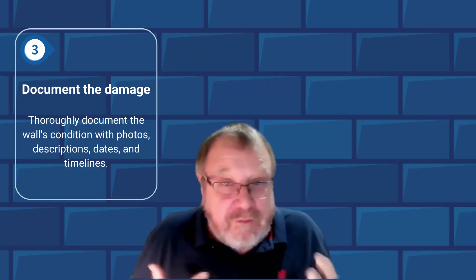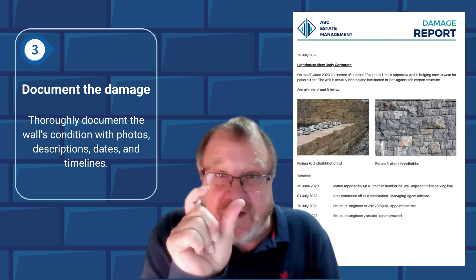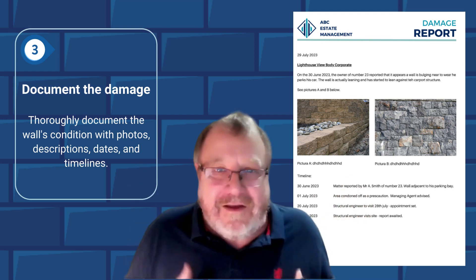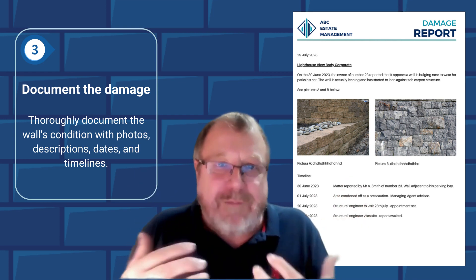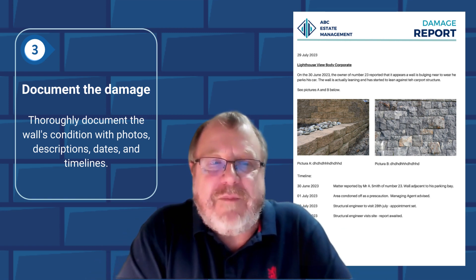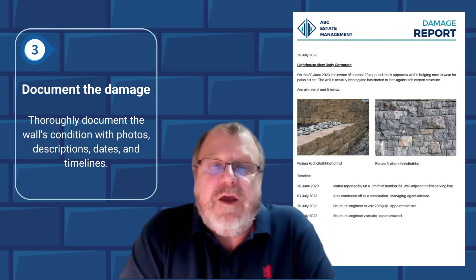Point three: document everything that's going on. Take photographs — a picture tells a thousand words. When it started, on that date, you've got a photograph; take another photograph afterwards. Maybe it's gaps widening, the wall leaning more, more damp happening, or it's bulging more. Take photographs and keep track of a timeline and a record. As trustees or the estate manager, document the damage — it's also good for insurance claim purposes later, or even useful information for the engineer.